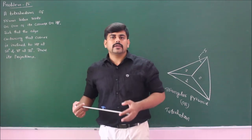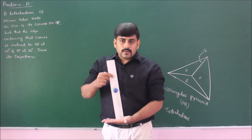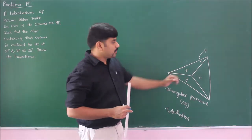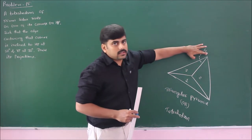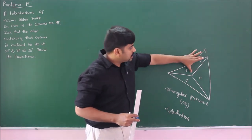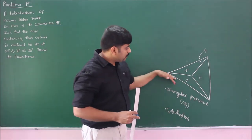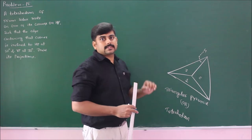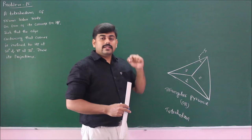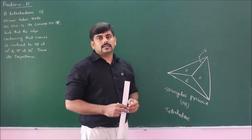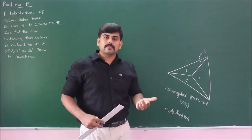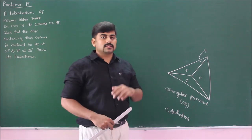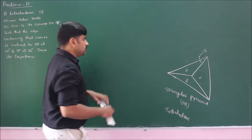Since the tetrahedron is resting with one of its corners on HP, in the first position I should make it stand on HP without inclining to any plane. If I take the projection in the front view with the edge towards the right-hand side, I get a triangular face. Looking from the top, since it is a triangular pyramid the top view will be an equilateral triangle, just as a square pyramid gives a square top view and a hexagonal pyramid gives a hexagonal top view.